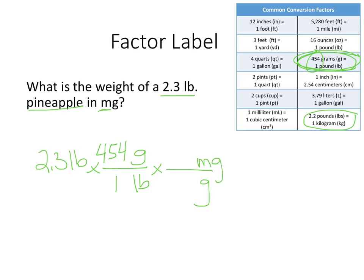The unit I'm trying to cancel goes on the bottom. The unit I'm looking for goes on the top. If you think about the previous slide with the conversions on it, gram is one. Milligrams is a thousand or one times ten to the third. So that's 2.3 times 454 times a thousand will give you 1044200. And then the units pounds cancels, grams cancels, milligrams.